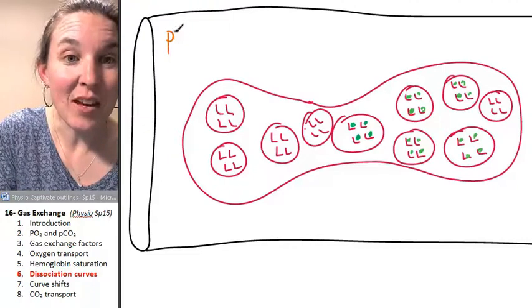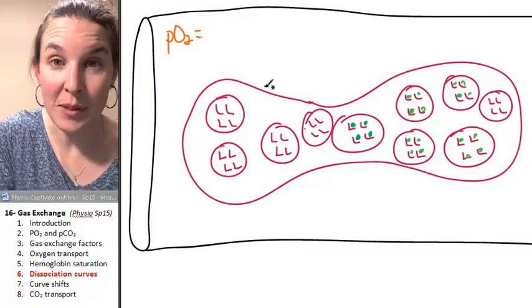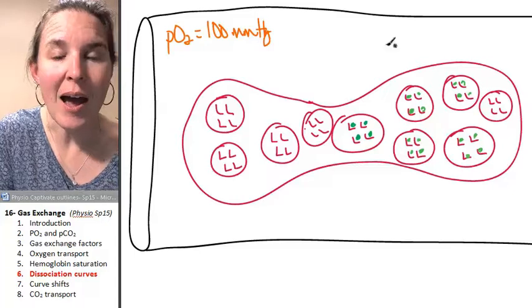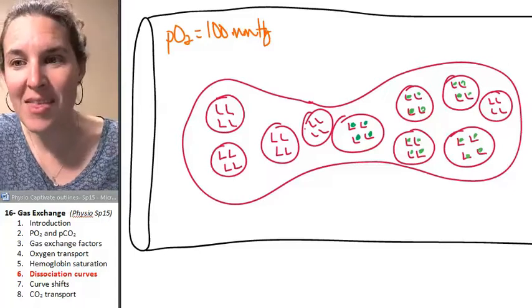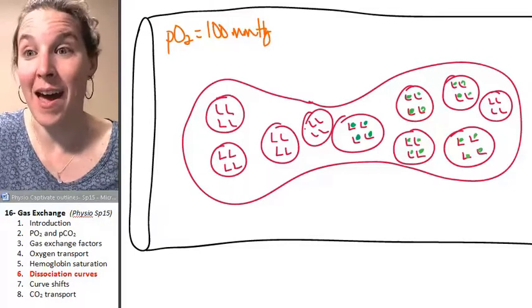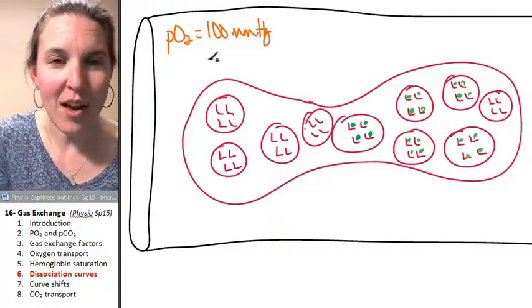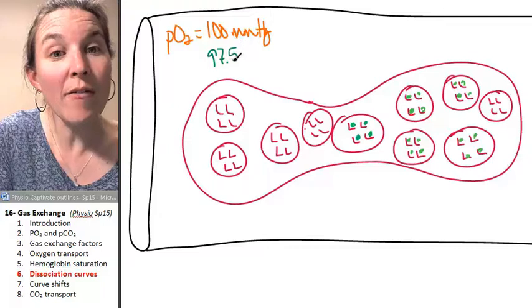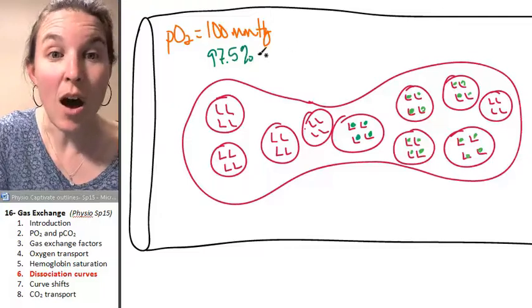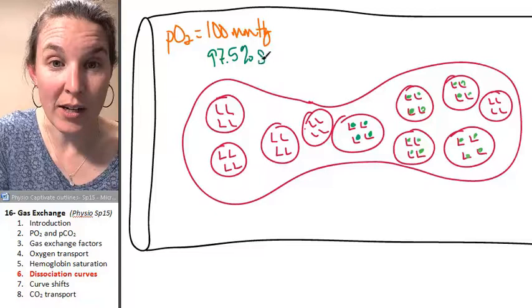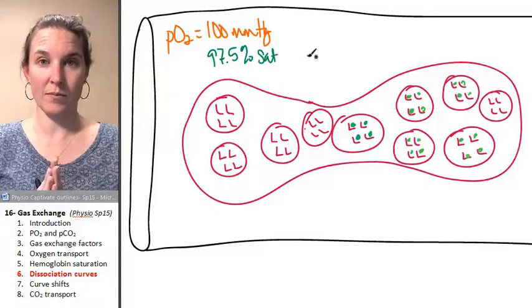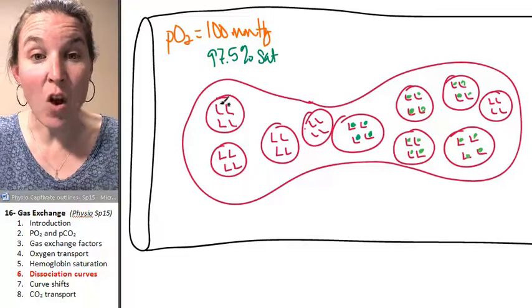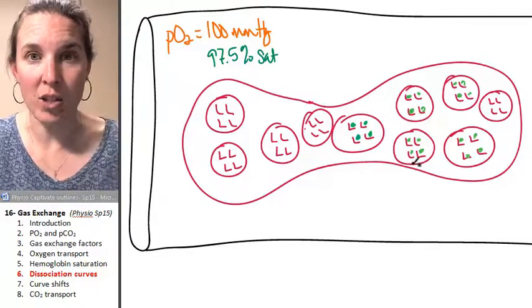If the PO2 of the plasma is 100 millimeters of mercury, I know that 97.5% of my hemoglobins are saturated. 97.5% of all of my seats are full of oxygen.